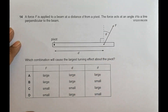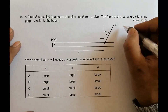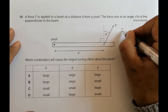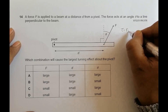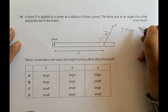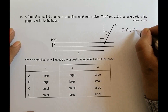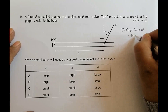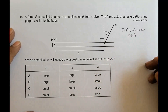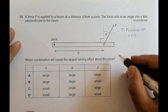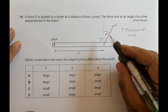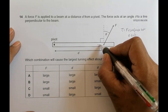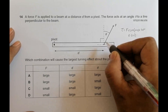We have to find which combination causes the largest turning effect about the pivot — that is, the torque. The torque tau is equal to F times R times sine of the angle between F and R. Here, R corresponds to D in this problem.